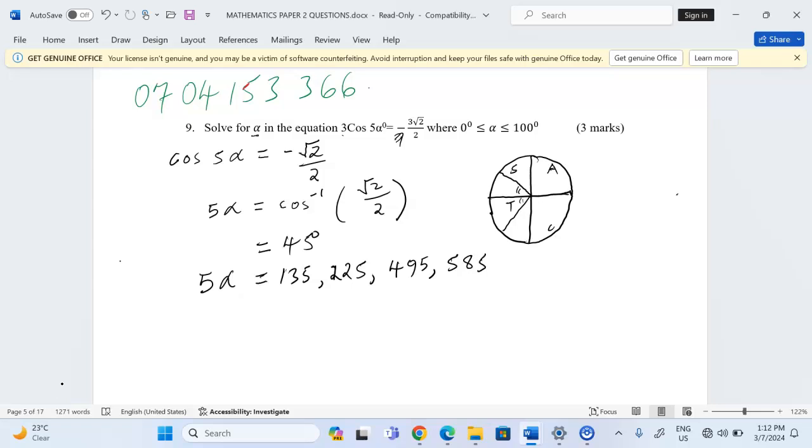such that all the trigonometric ratios of 495 are the same as those of 135. All the trigonometric ratios of 585 are the same as those of 225.